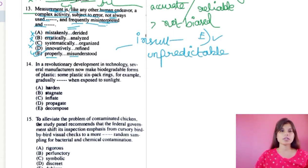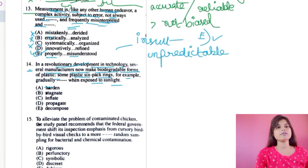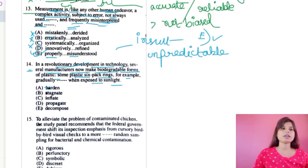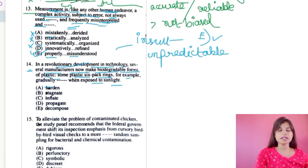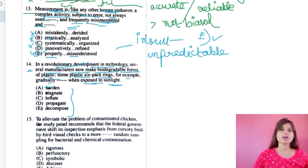Question 14: In a revolutionary development in technology, several manufacturers now make biodegradable forms of plastic. Some plastic six-pack rings, for example, gradually dash when exposed to sunlight. There has been a revolutionary development in technology and several manufacturers are now making biodegradable forms of plastic. We need to put the correct word to complete the sentence about what these plastic six-pack rings do when exposed to sunlight.